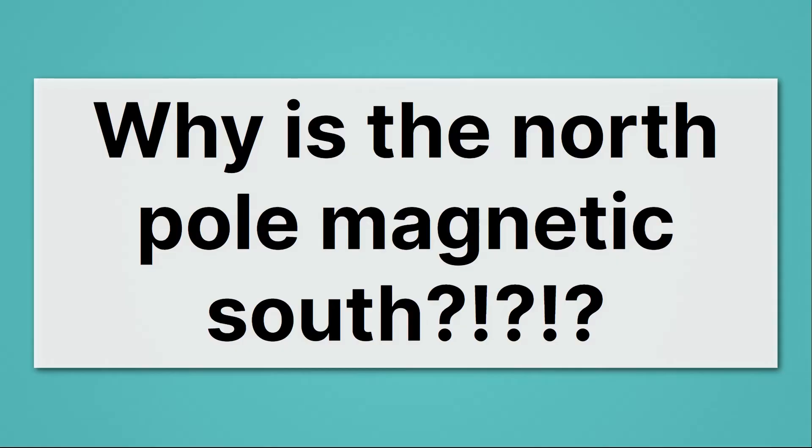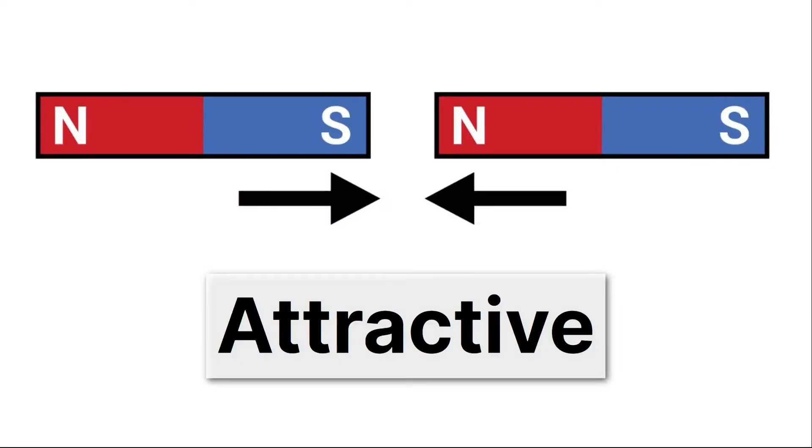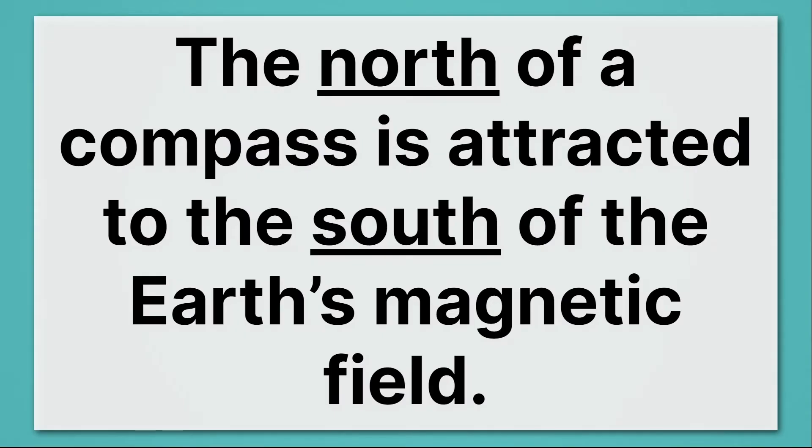Well, to understand, we just have to remind ourselves of how magnets work. South is attracted to north. So we get an attractive force between opposites. And what that means is the north of a compass is attracted to the south of the Earth's magnetic field, which turns out to be the top of the Earth. Perhaps a picture will help.